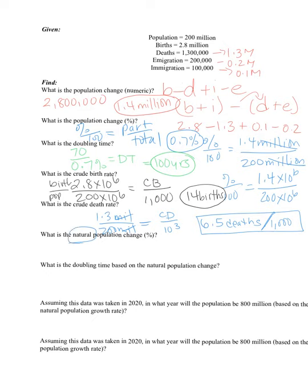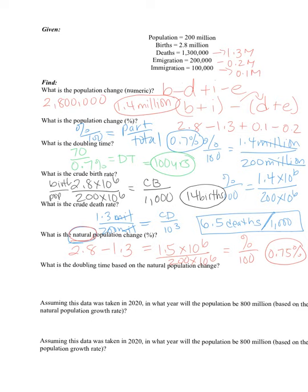Next is natural population change. I need to read carefully — natural population means factoring in only births and deaths. So I take 2.8 minus 1.3 = 1.5 million, or 1.5 times 10 to the 6, out of the total population of 200 times 10 to the 6, equals percent over 100. Cross multiplying and solving, I get 0.75%. That's the natural population change.